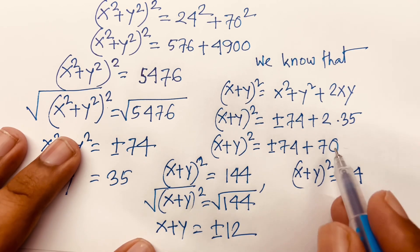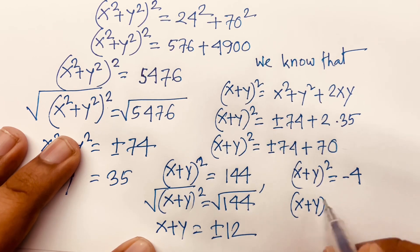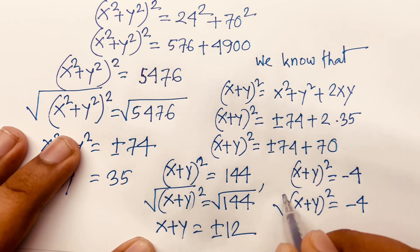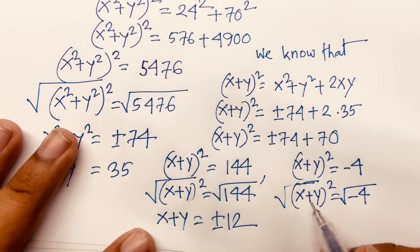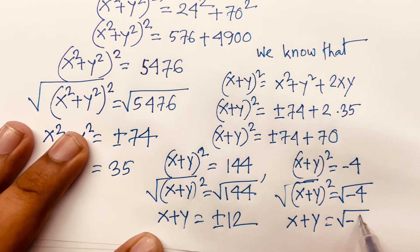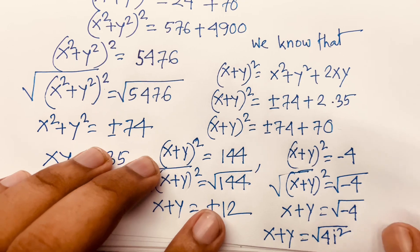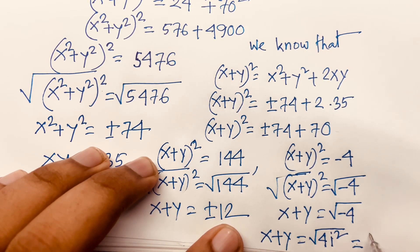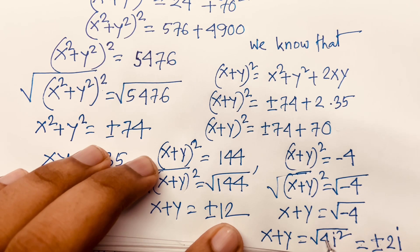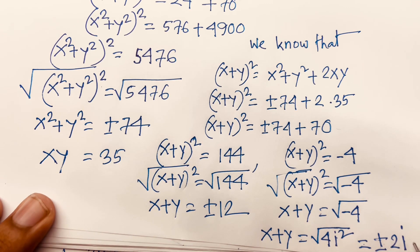The other case is (x + y)² equals minus 74 plus 70, which is minus 4. I use both sides square root. So x plus y equals the square root of minus 4, which equals the square root of 4i squared. Since i² equals minus 1 and square root of 4 is 2, this gives x plus y equals plus or minus 2i.